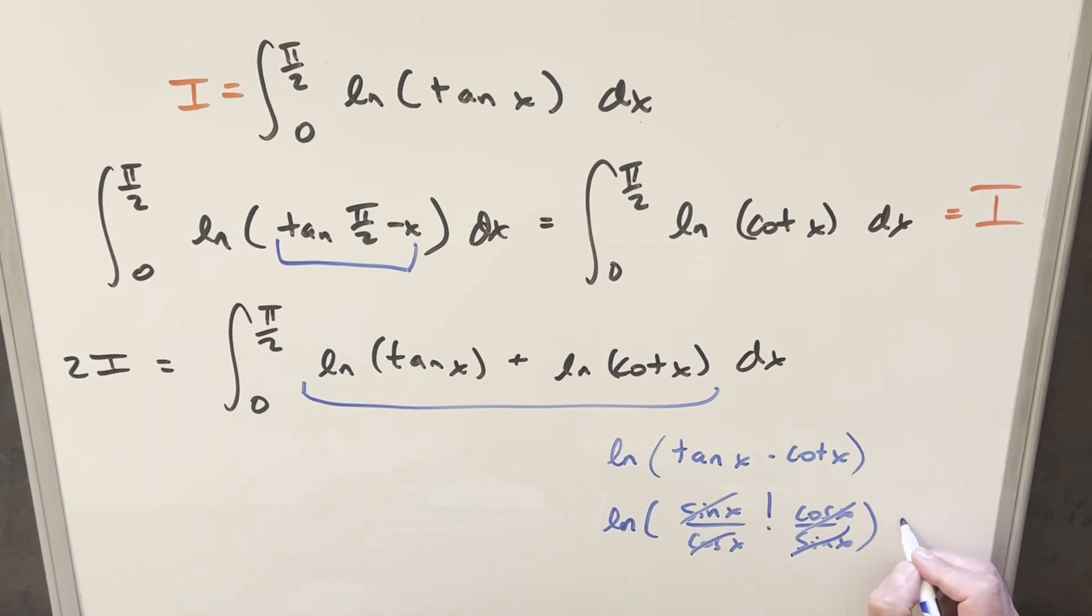But natural log of 1 is just 0. And so therefore, this whole thing is 0. We're integrating 0. And so for my final solution to this, we just get 0.